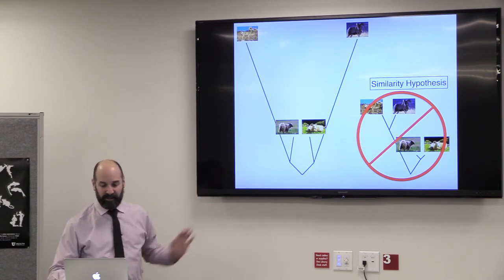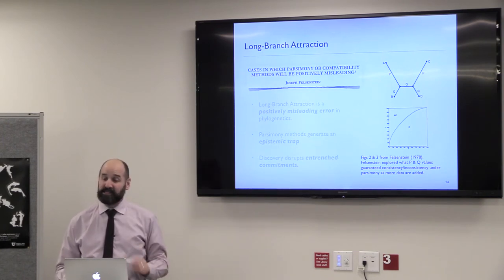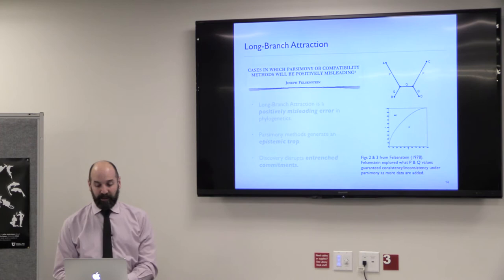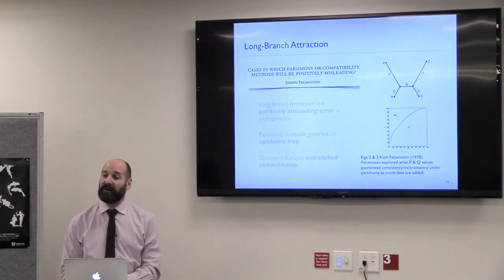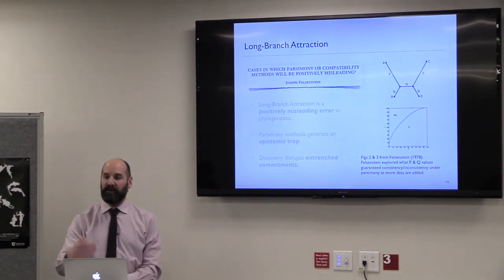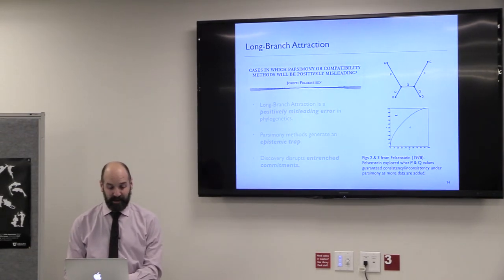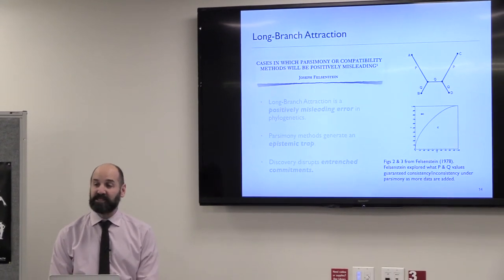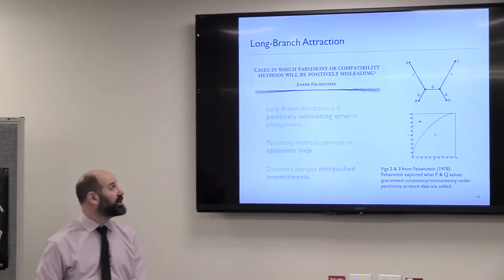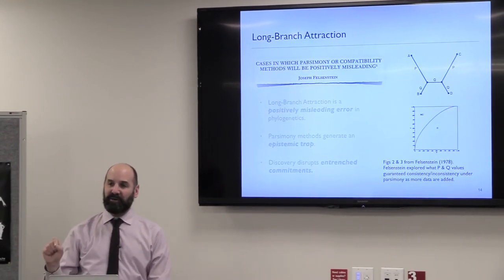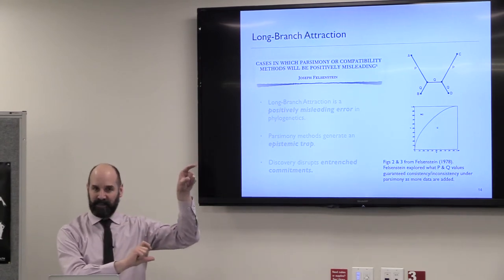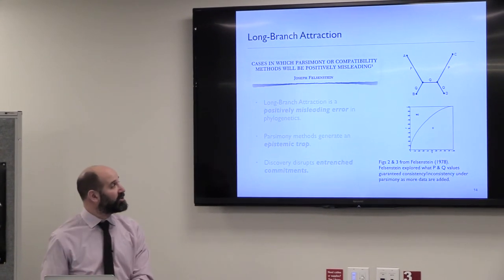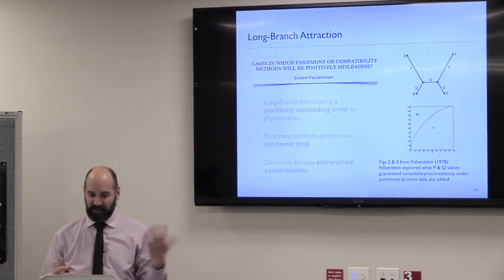This cartoon example recreates what was demonstrated by Joe Felsenstein in 1978 — a really elegant paper. He discovered that methods being used to reconstruct evolutionary hypotheses systematically returned the wrong hypothesis under certain conditions. This is where the phrase 'positively misleading error' comes from. It describes a statistical inconsistency where convergence is guaranteed on an incorrect hypothesis. It's called long branch attraction because it occurs when long branches are connected to short branches next to another long-branch/short-branch pair.